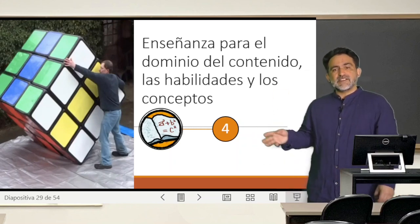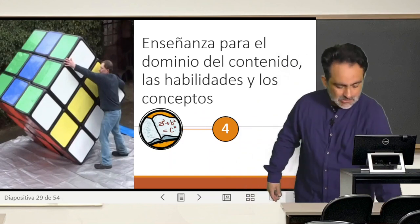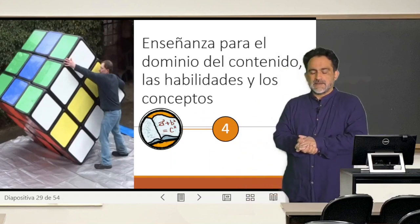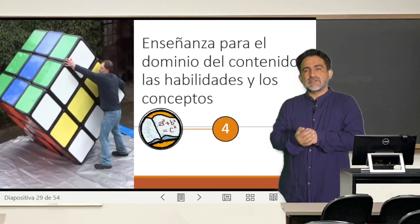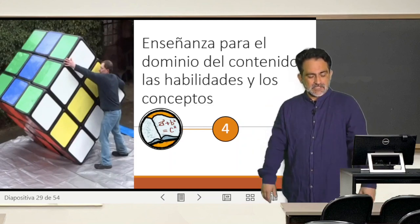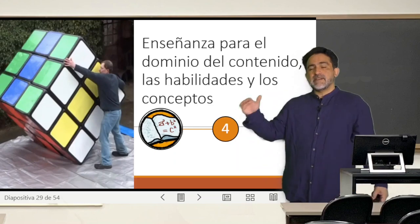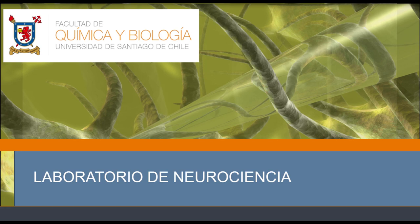Los puntos anteriores tienen que ver con las condiciones para el aprendizaje, lo que uno hace durante el aprendizaje. Pero todos nosotros tenemos la secreta aspiración de que los estudiantes, para nuestros objetivos de aprendizaje, adquieran un cierto desempeño, una cierta performance, o un cierto dominio del conocimiento. Entonces, ¿cómo nos aseguramos de que los estudiantes lleguen a ese dominio del conocimiento?